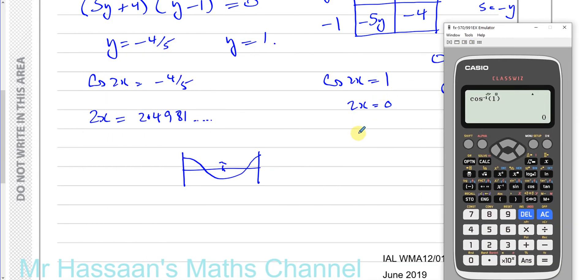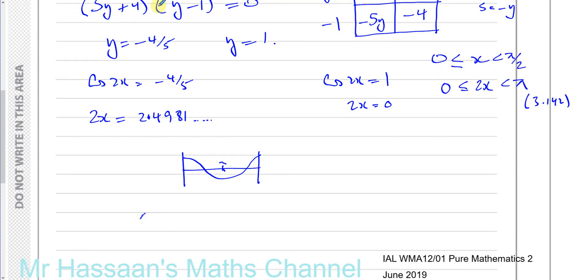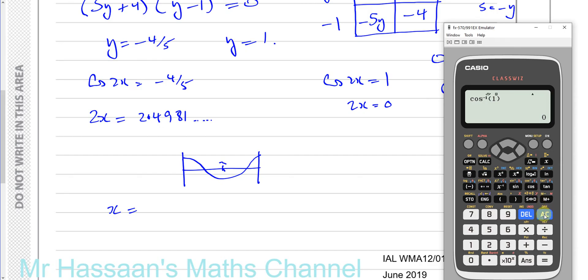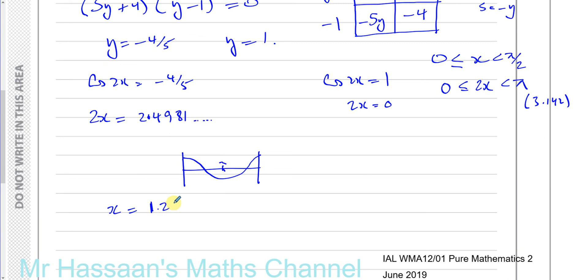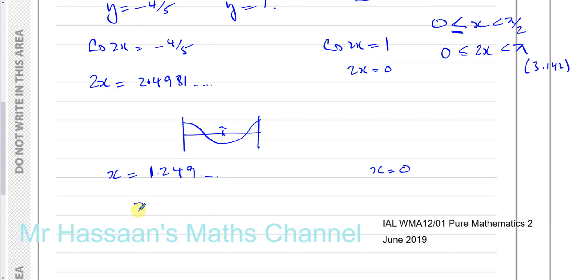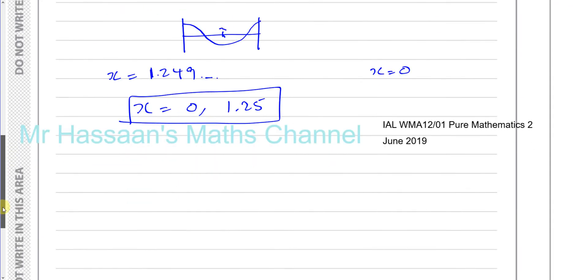So that's the only solution in this range. So here we can say that x is equal to this divided by 2. And that was this answer divided by 2, which gives us 1.249. 1.249 and x equals 0. And we can include the 0 because it says less than or equal to 0. So they want our answers to two decimal places. So you should say x is equal to 0 and 1.25 radians. And there we have the answer to question number 9.